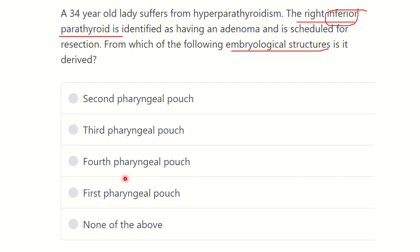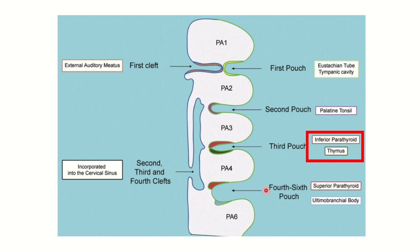Here we can see a picture of the primitive pouches of development — first, second, third, and fourth pouches — which are usually present during embryological development. From the first pouch, the Eustachian tube and tympanic cavity develop. From the second pouch, the palatine tonsil develops. From the third pouch, the inferior parathyroid and thymus develop.